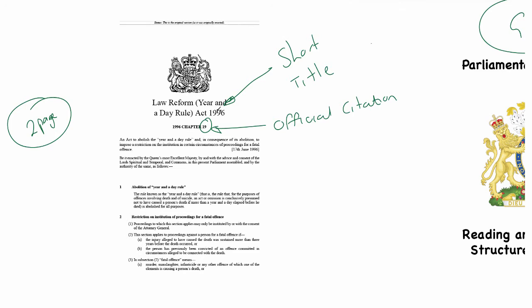The next thing we have is what's known as the long title, which comes immediately below the official citation. Here the long title says it is 'an Act to abolish the year and a day rule, and in consequence of its abolition to impose a restriction on the institution in certain circumstances of proceedings for a fatal offence.' The long title will become really important when we look at statutory interpretation and judicial creativity.